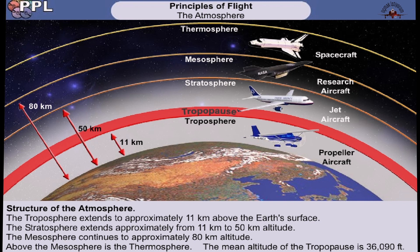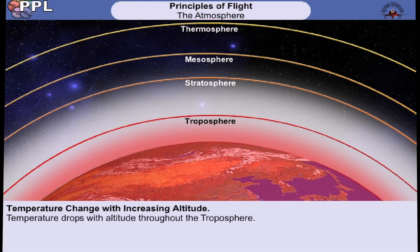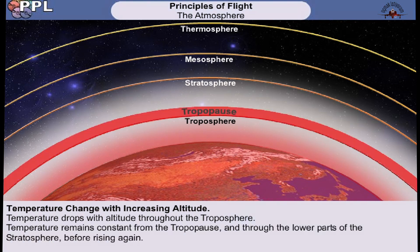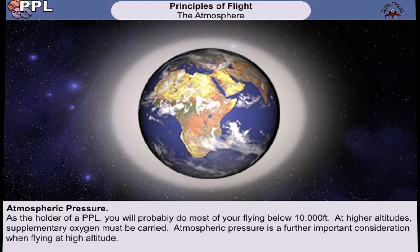These layers of the atmosphere are determined by the change in temperature they experience with increasing altitude. The earth is heated by the sun. Being closest to the earth, the troposphere is then heated by the earth. With increasing altitude, the atmosphere is heated less and less and its temperature drops. We'll only concern ourselves with the effect of temperature on the troposphere and stratosphere, as it's within these layers that aircraft fly. The temperature remains constant from the tropopause through the lower parts of the stratosphere before rising again. As the holder of a private pilot's license, you'll generally fly at altitudes of less than 10,000 feet.